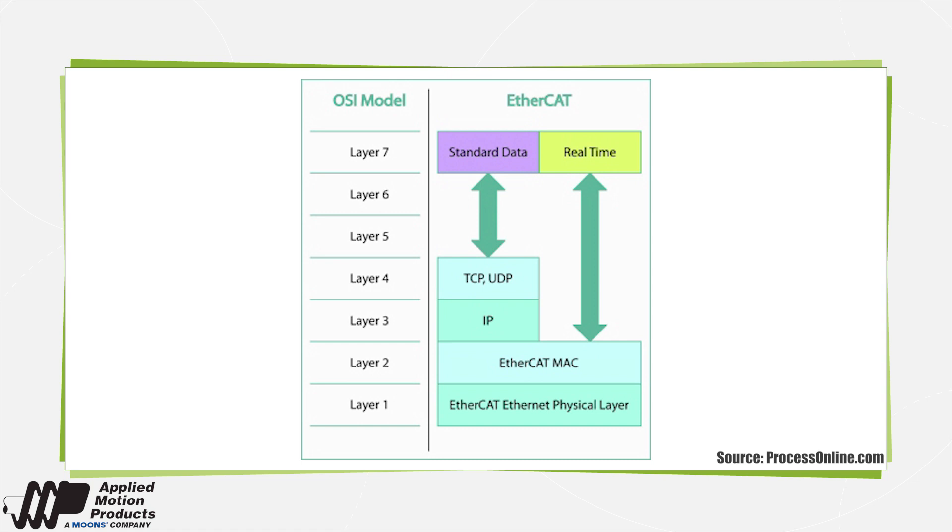Typically, processed data exchange with 1,000 distributed digital I/O takes about 30 microseconds, which is typical for a transfer of 125 bytes over 100 megabits per second Ethernet protocol.